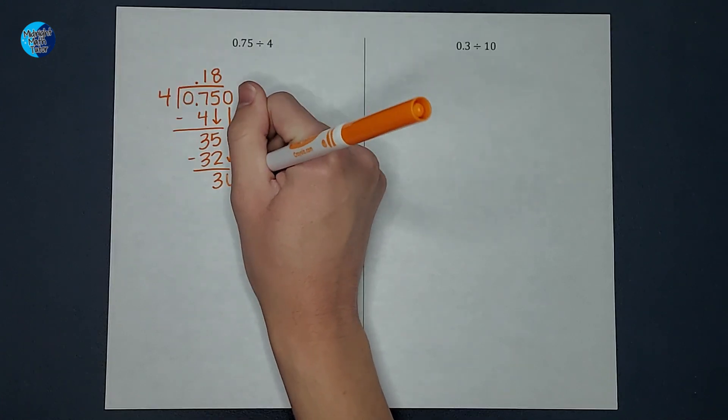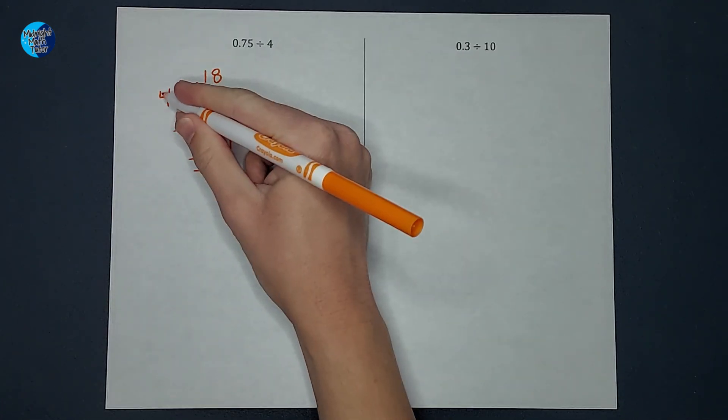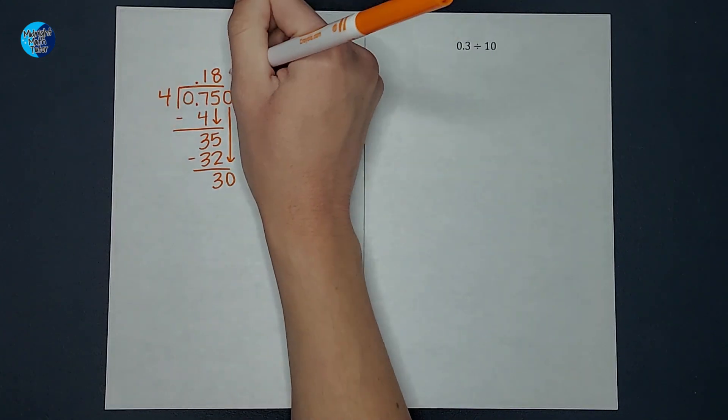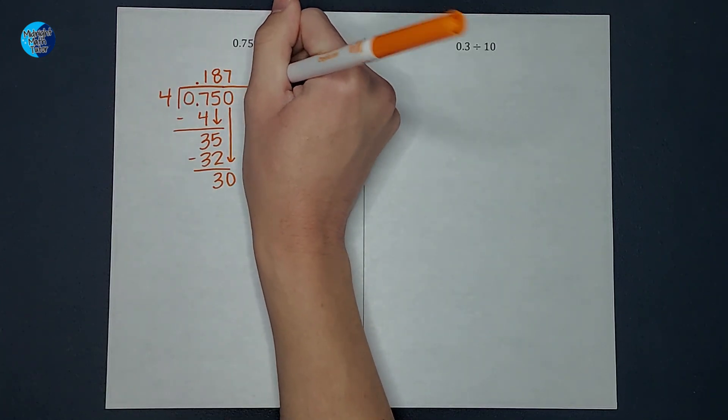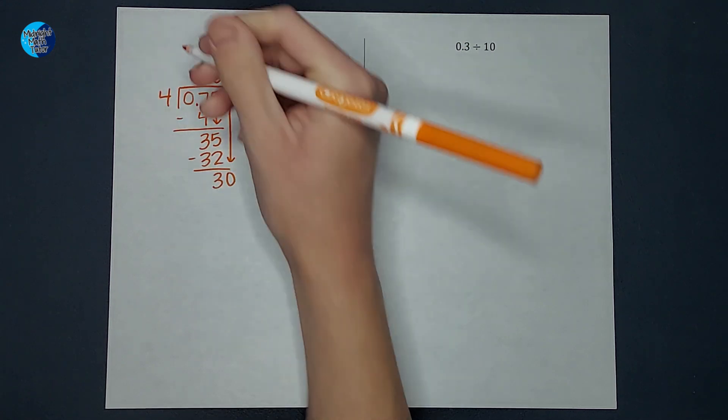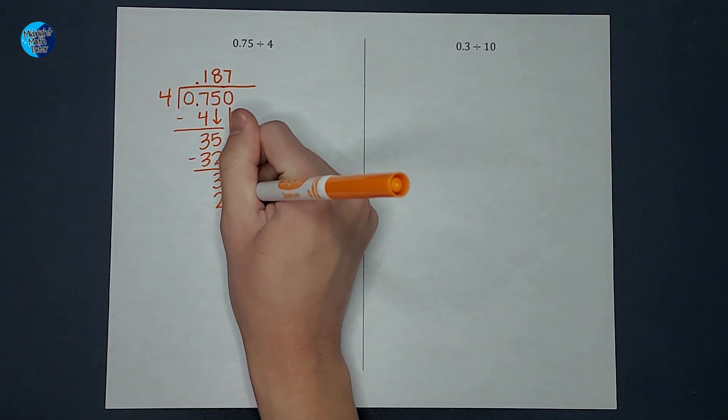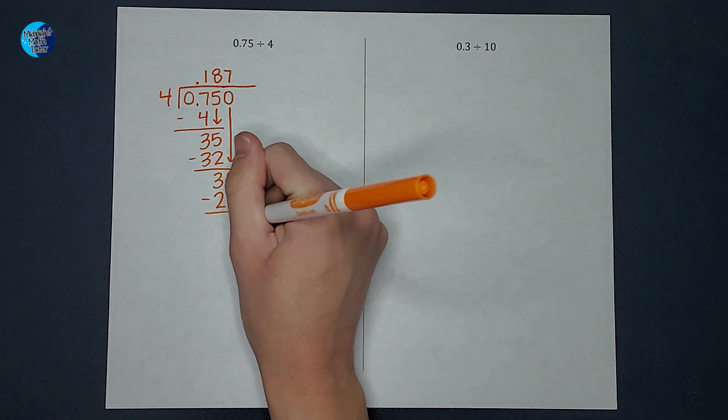pull it down, and then I can ask myself how many times does 4 go into 30? It goes 7 times. I always like to keep bringing my bar over there. 7 times 4 gives me 28. Subtract and I get 2.